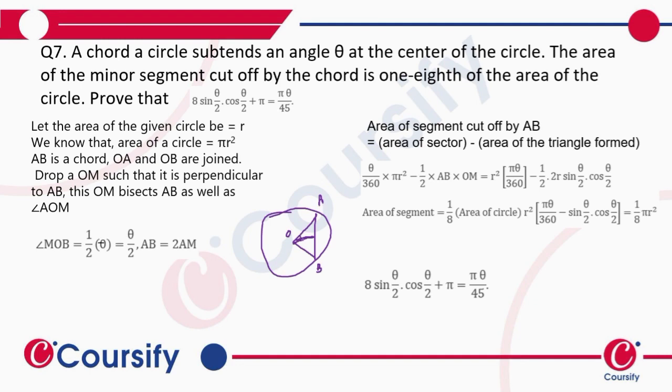This is perpendicular bisector, so angle MOB becomes half of angle theta, which is theta/2, and AM becomes half of AB. So we'll put these values in the area of the segment cut off by AB. The formula will get the required result: sin theta/2 cos theta/2 plus pi equals pi theta/45.